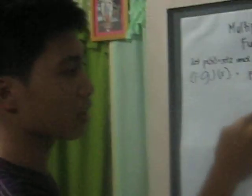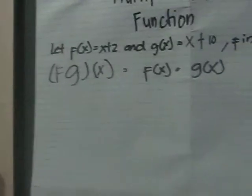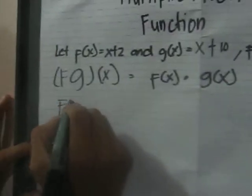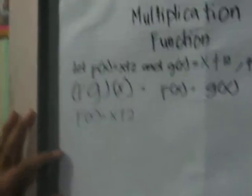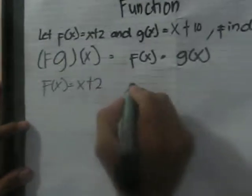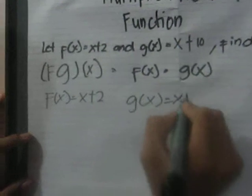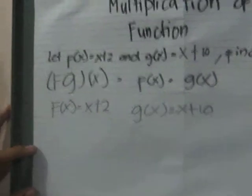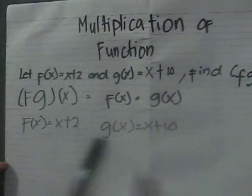This should be the equation used. The value of f(x) equals x plus 2 and the value of g(x) is equal to x plus 10. We should multiply g(x) to f(x).